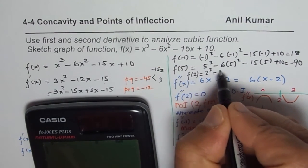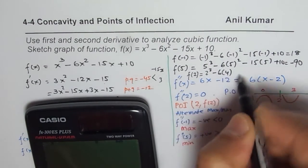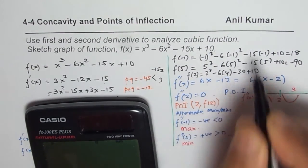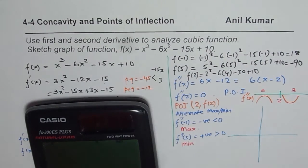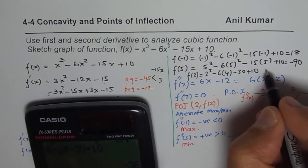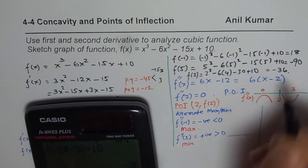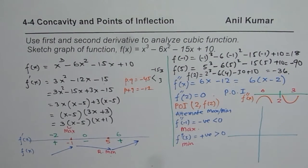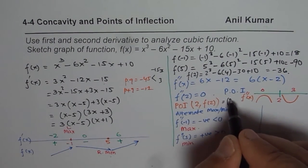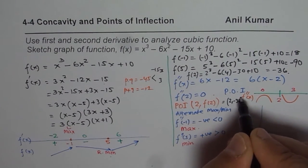So f(2) = 8 − 24 − 30 + 10 = −36. So the point of inflection is at (2, −36).